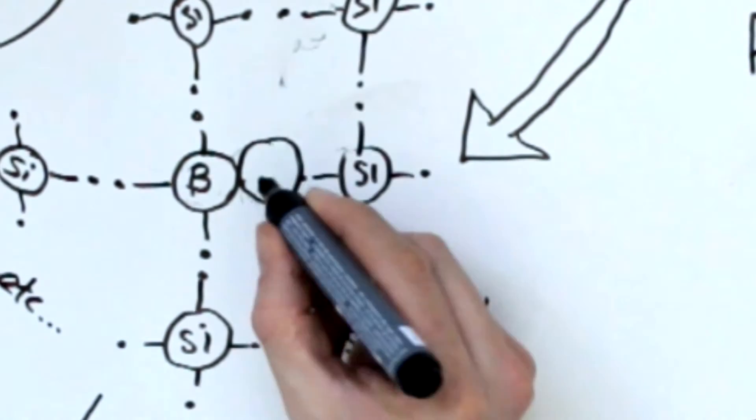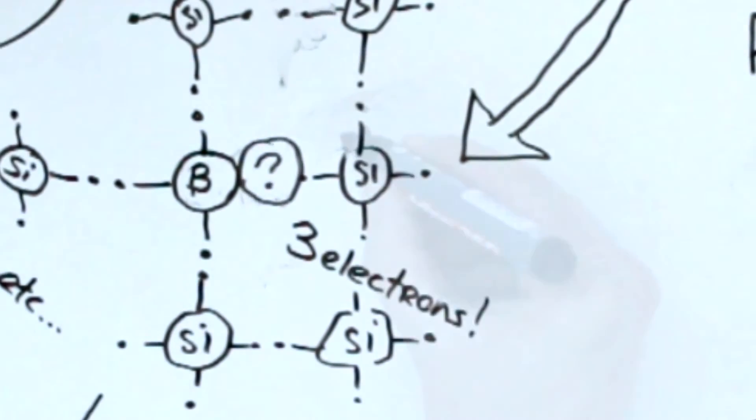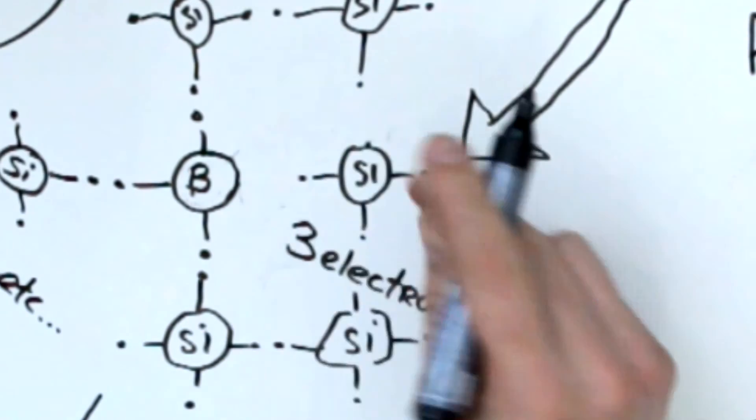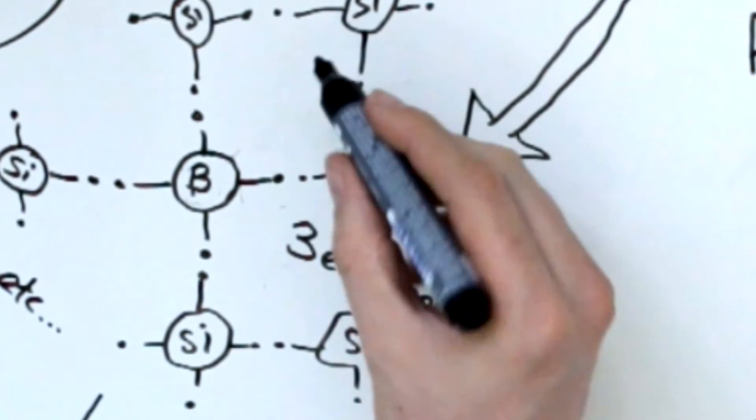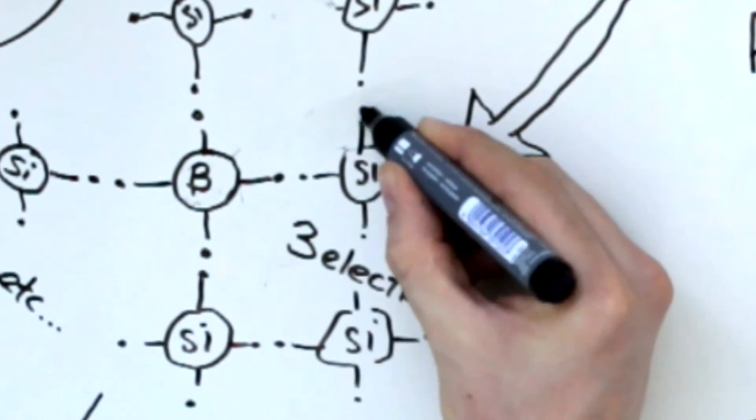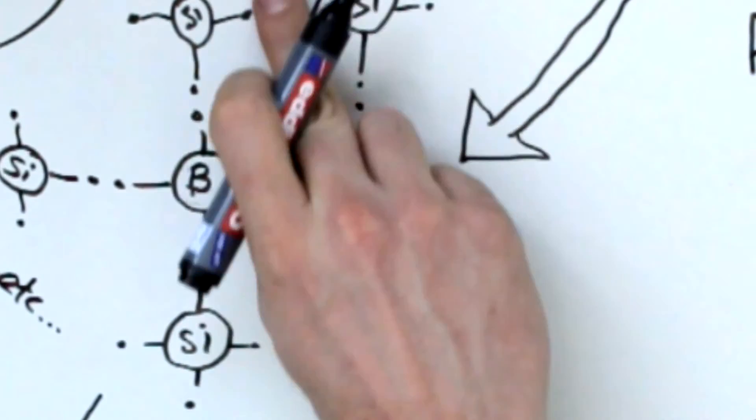The holes in the P-type semiconductor are constantly filled with electrons from neighboring atoms. This causes the hole to move over to the neighbor. So just like the free electrons in an N-type semiconductor, these holes can move freely through the material as well.